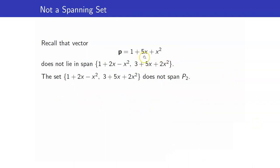Recall from our previous lecture that the polynomial 1 + 5x + x² does not lie in the span of a certain set. Since we found a polynomial in P2 which is not in that span, that set cannot span P2. In this lesson we used the definition to determine whether a given set spans the entire vector space. In our succeeding lessons, we will see there is a faster way of checking this — but first we need to understand the concepts of linear independence, basis, and dimension.